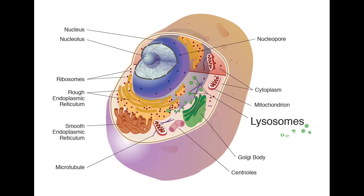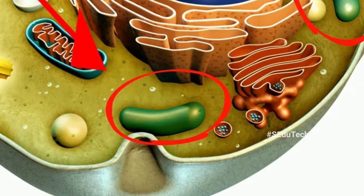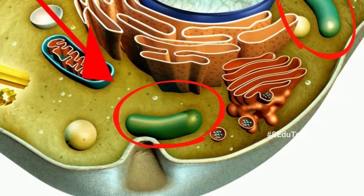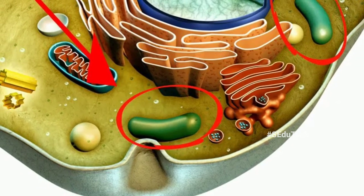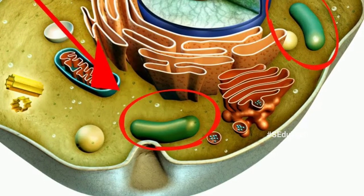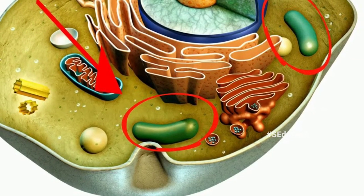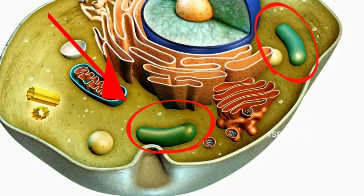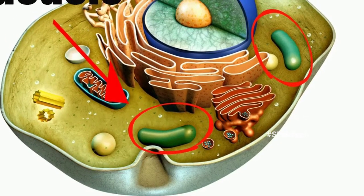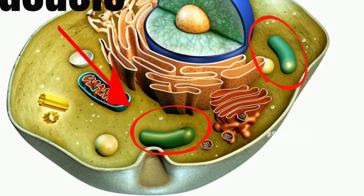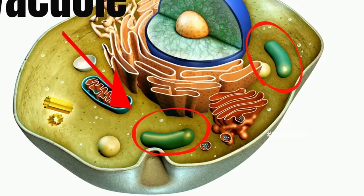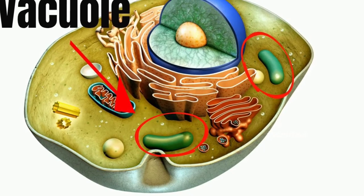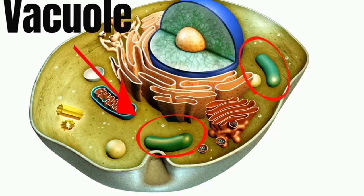Our twelfth part is vacuoles. These are large membrane-enclosed compartments that store toxic waste as well as useful products such as water. These are mainly found in plants. Vacuoles are large membrane-enclosed compartments; toxic waste is poisonous waste, plus useful products such as water.